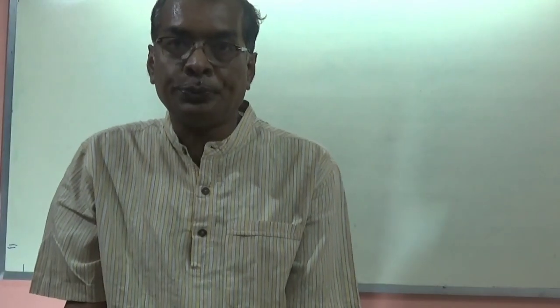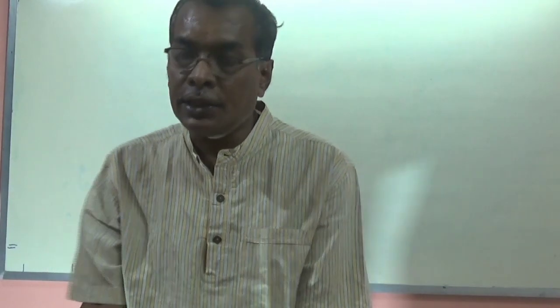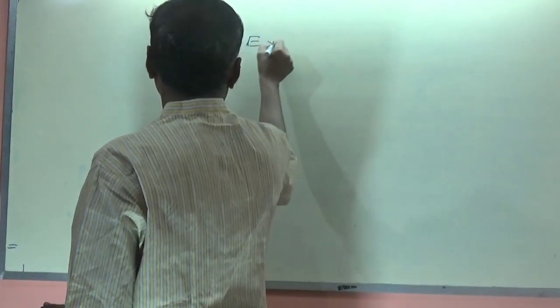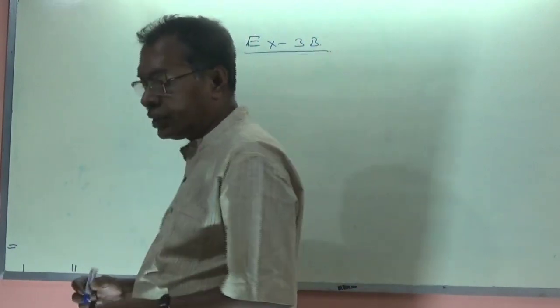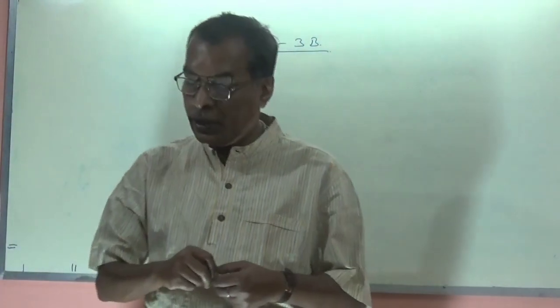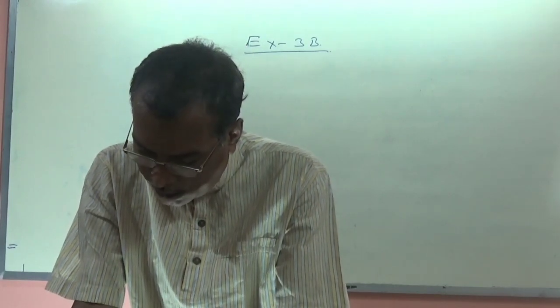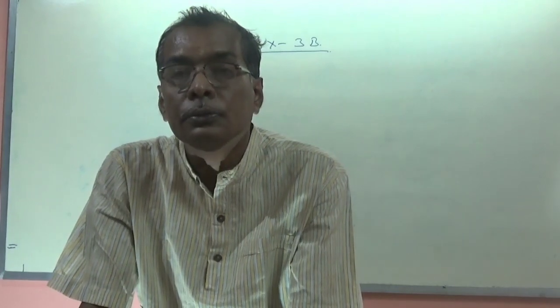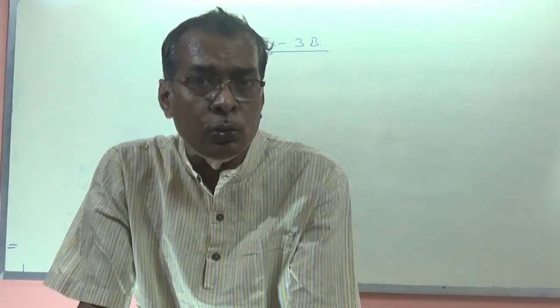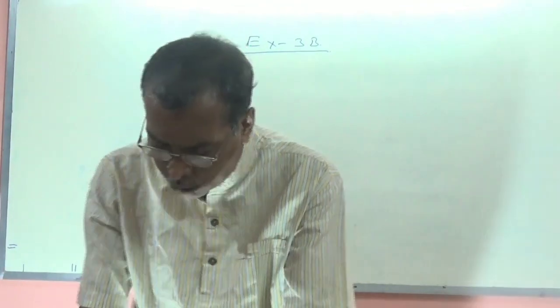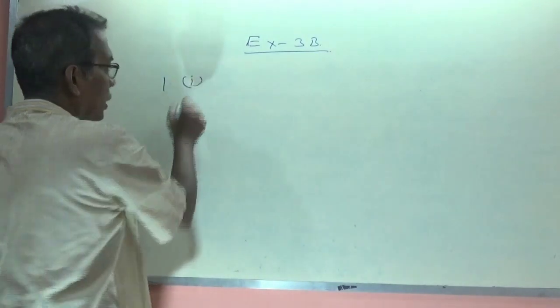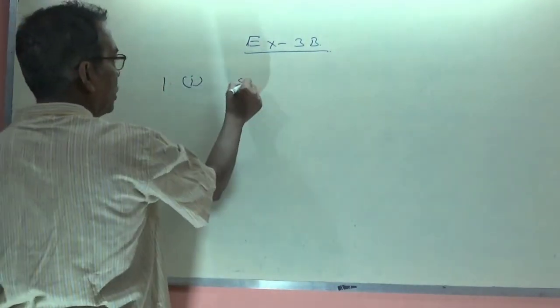Welcome back. I'm going to start the exercise based on the last class discussions. The exercise is Exercise 3 — quite simple things. It is based completely on the ideas I told you last day. The question says: give reason why none of the numbers below is a perfect square. Last day I told you: if a number ends with 2, 3, 7, or 8, it is not a perfect square. The first number is 53,72 and 53,78.